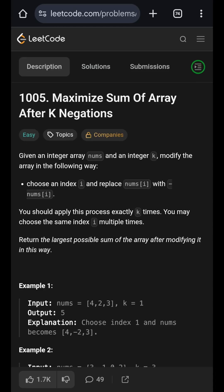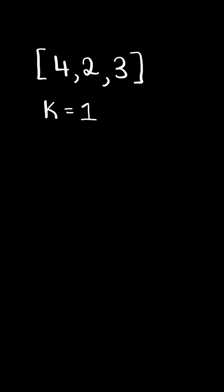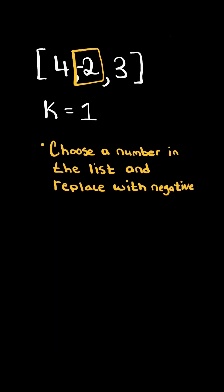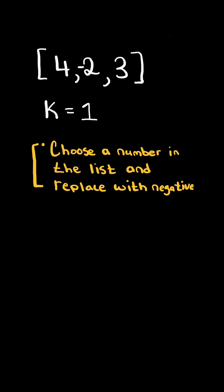Maximize sum of array after k negations. Given a list of numbers and an integer k, choose a number in the list and replace it with its negative. We must apply this process exactly k times.